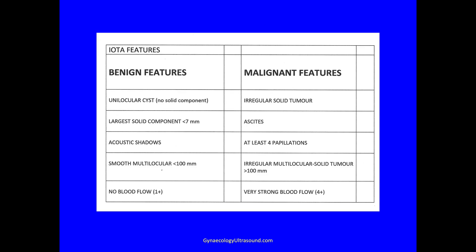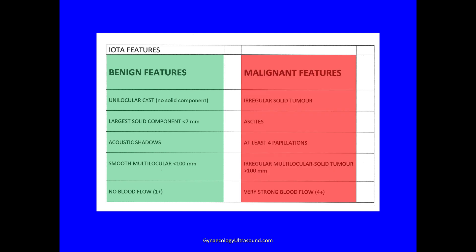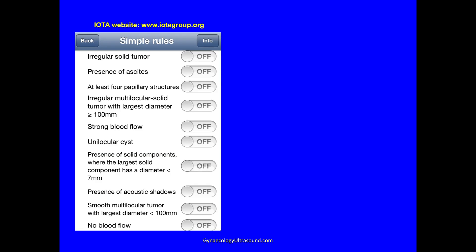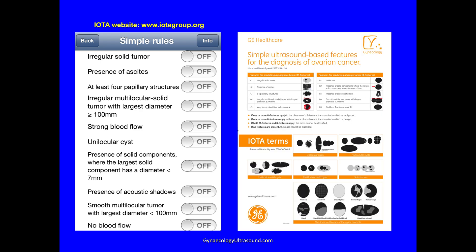This is what we have pinned up in our scan room — the benign features and the malignant features. You can just tick them off and categorise a mass as benign, malignant, or uncertain/inconclusive. There's an app for simple rules as well, and there's a poster we also have in our scan room.